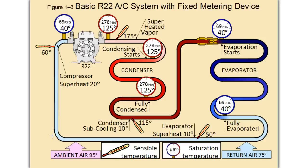As we leave the compressor, we have 278 psig superheated, high pressure, high temperature gas — 100% vapor. Our thermometer shows 175 degrees line set temperature. That doesn't correspond to what our gauge says at 125 degrees, because this is superheated vapor — it is not in the saturated state. So it's normal to see a difference between what your gauges tell you the pressure is and what a thermometer would tell you at the outlet of the compressor.